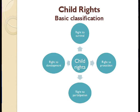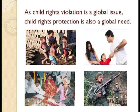Let us understand the basic classification of child rights. There are four kinds of child rights: right to participation, right to survival, right to development, and right to protection. Now, as child rights violation is a global issue, child rights protection is also a global need.